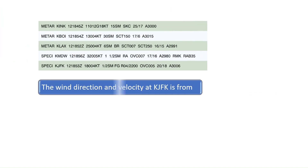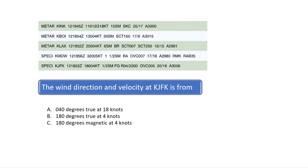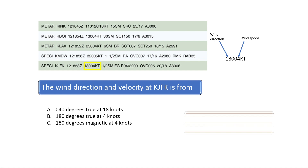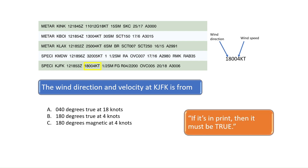The wind direction and velocity at KJFK is from — the weather report for KJFK is on the last line in the chart. The wind forecast is highlighted by the yellow box. The first three digits indicate the wind direction, which in this case is 180 degrees. The last two digits indicate the wind speed, which is 4 knots. This question tests the pilot's knowledge of magnetic versus true wind direction. One easy way to remember the difference is the saying: if it's in print, then it must be true. Thus, the wind direction is 180 degrees true at 4 knots. The correct answer is B.